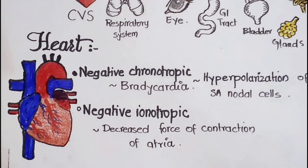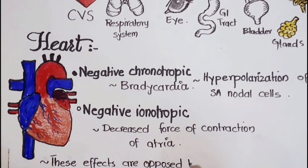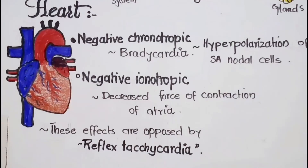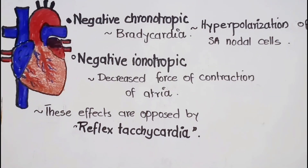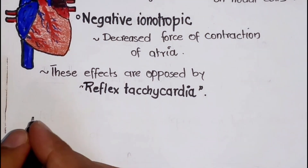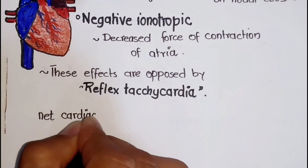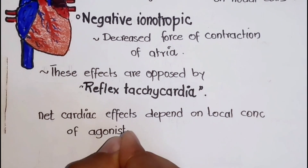The cholinoreceptors responsible for these cardiac effects are M2 cholinoreceptors. Furthermore, the effects of parasympathomimetics on the heart are often opposed by reflex sympathetic activation. In response to low blood pressure, reflex tachycardia occurs due to the release of catecholamines by sympathetic neurons. Therefore, net cardiac effects depend on the local concentration of agonists in the heart.